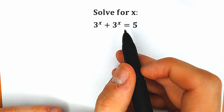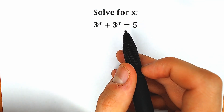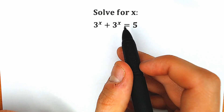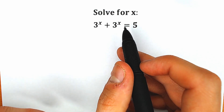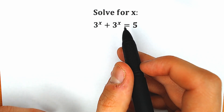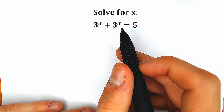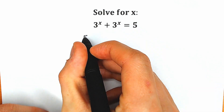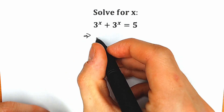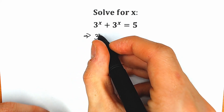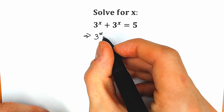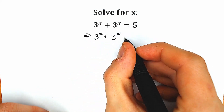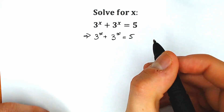If you have your solution, your answer, you can write it down in the comment section, and in a few minutes we will check your answer. So first of all, let's rewrite our question. We have 3 to the x plus 3 to the x plus 3 to the x equal to 5.